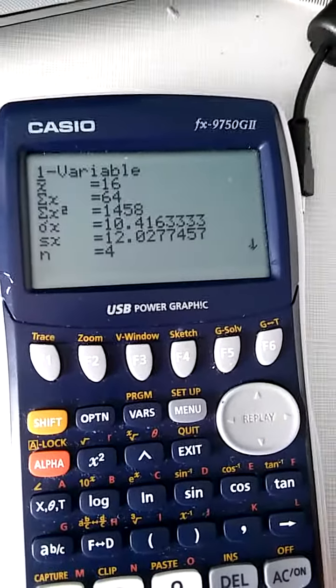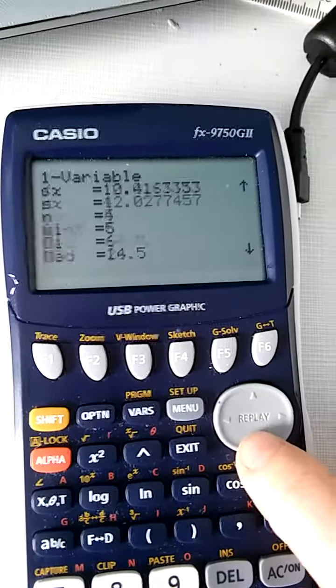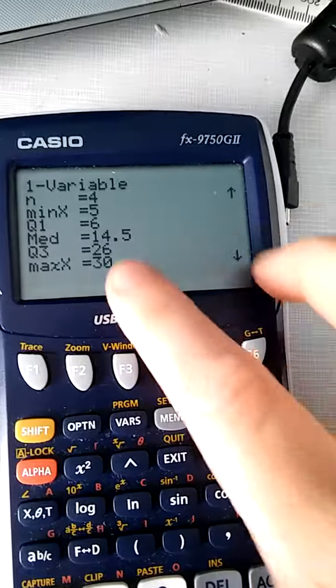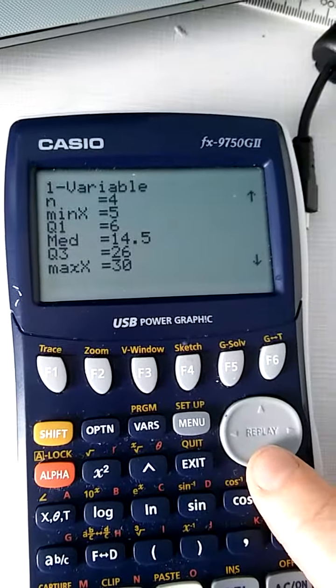If you were after the mean and the mode and things that we looked at last lesson, we can scroll down using this cursor key. Just remind yourself there, the Q1 is the lower quartile, the Q3 is the upper quartile.